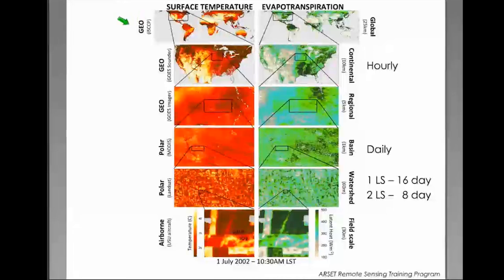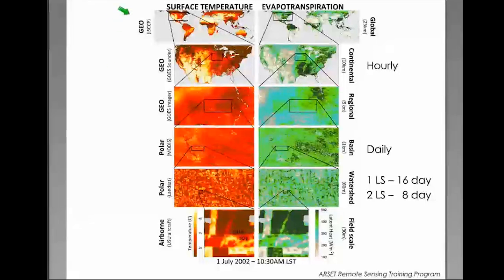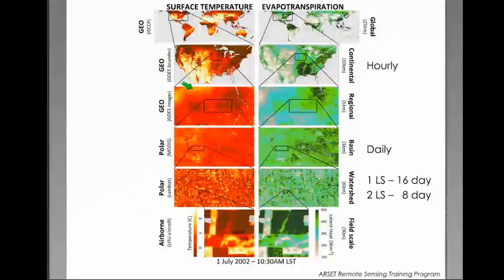ALEXI is run on the global to regional scale — from MODIS to geostationary, usually from 1 to 25 kilometers. We call it a multi-scale system because we produce regional fluxes using geostationary and polar data. When we have higher resolution data from Landsat or aircraft at field scale, we use the regional scale as a boundary condition for the high resolution. We have a disaggregation tool called DisALEXI which produces evapotranspiration at the field scale, making it a fully coupled multi-scale system where energy is conserved across all scales.